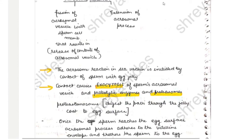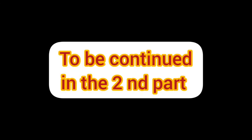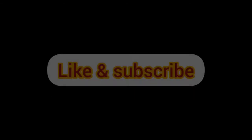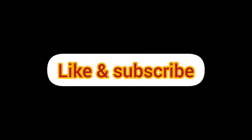The second interaction between sperm and egg jelly results in the acrosomal reaction, which will be covered in the next part of the video. Notes will be available in the third part, so like, subscribe, and comment for more updates.